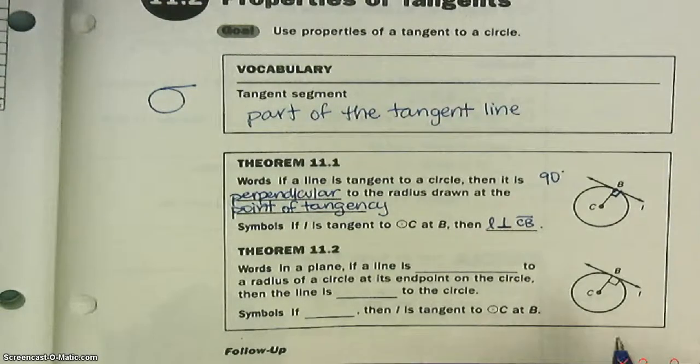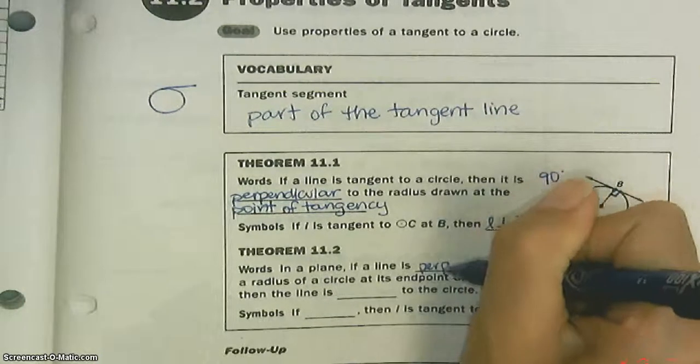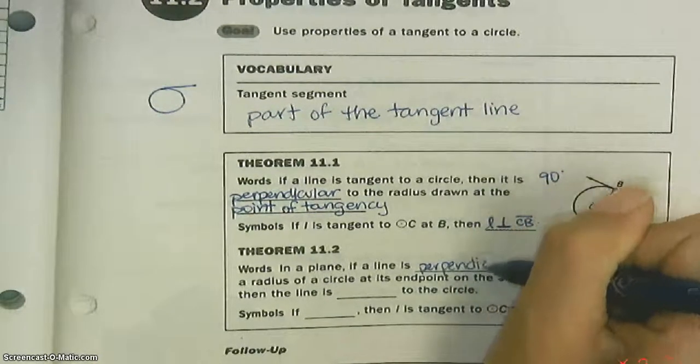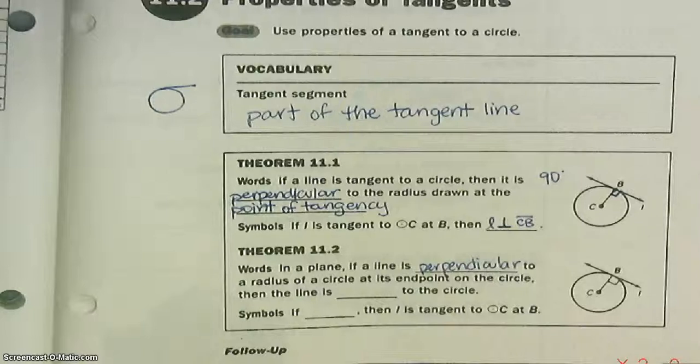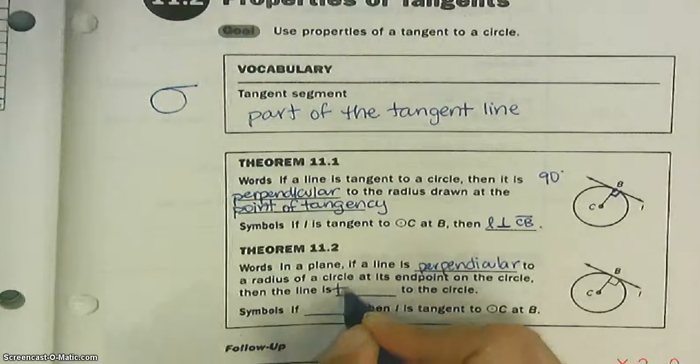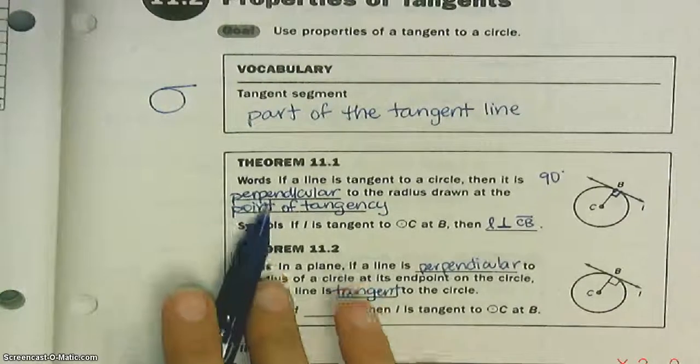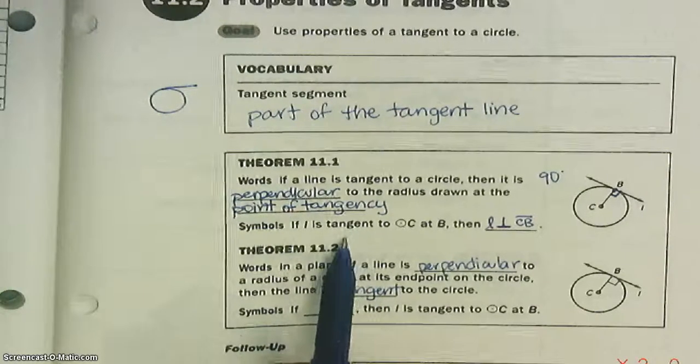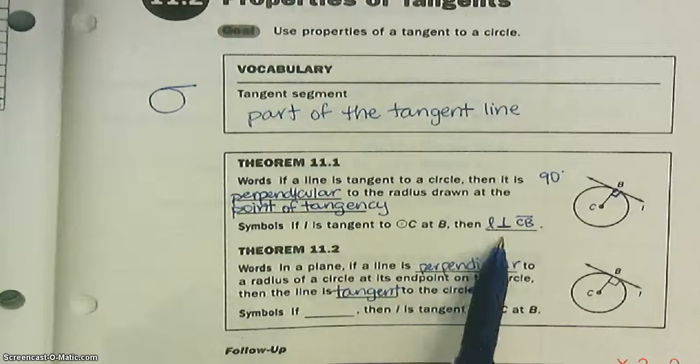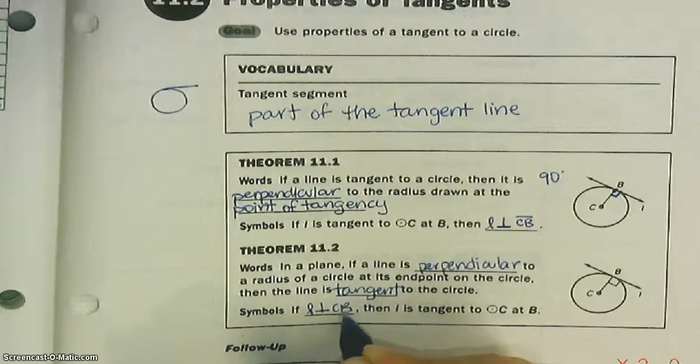Theorem 11.2: In a plane, if a line is perpendicular to a radius of a circle at its endpoint, then the line has to be tangent. This is the reverse of this. This one's saying, if it's tangent, then it's perpendicular. This says, if it's perpendicular, then it's tangent.